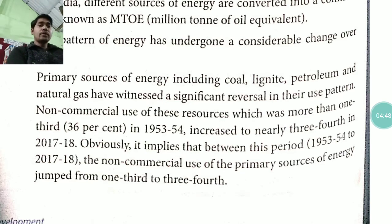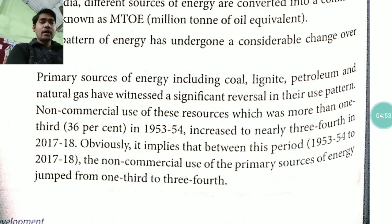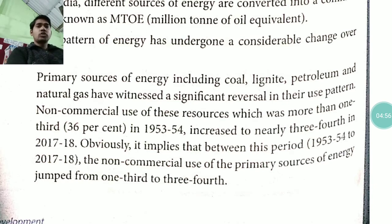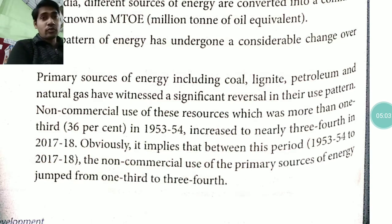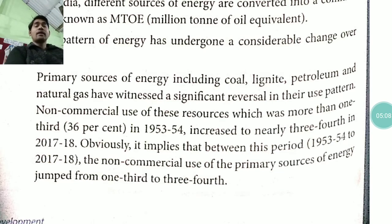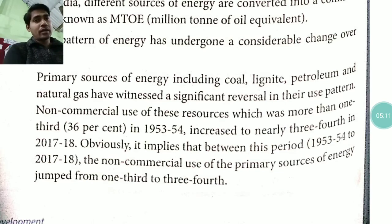Between 1953–54 and 2017–18, the non-commercial use of primary sources of energy jumped from one-third to three-fourths — that is, from 36% to 75%.